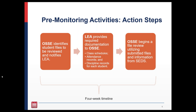Four weeks prior to the desktop review, OSI will provide your LEA with a list of students whose records will be reviewed. It is the responsibility of the LEA to provide OSI with class schedules, attendance records, and discipline records for each student. OSI will use the student's records in SEDS as well as attendance and discipline records to make a compliance determination on each item. OSI will not consider items contained in a student's hard copy file to make a compliance determination.